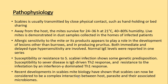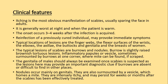Clinical features: itching is the most obvious manifestation of scabies. It is usually spared on the face and in adults is generally worse at night. Onset is 3 to 4 weeks after infection is acquired. Reinfection of a previously cured individual may provoke immediate symptoms. Typical locations of lesions are the finger webs, flexor surfaces of the wrist and elbows, axillae, buttocks, genitals, and breasts in women. The typical lesion of scabies is a burrow — a slightly raised, brownish, tortuous lesion — and an inflammatory papule or vesicle sometimes surmounts a burrow at one corner where the mite is found if scraped.